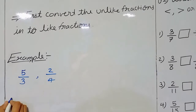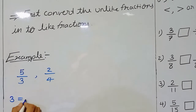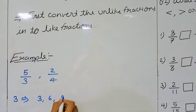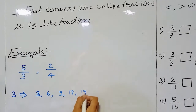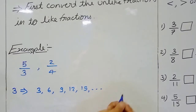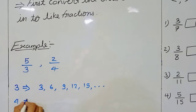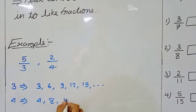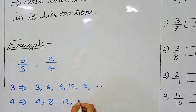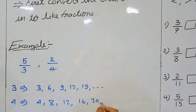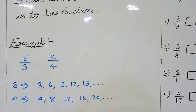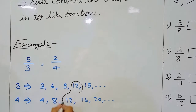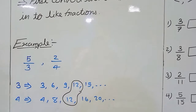As we learned: multiples of 3 are 3, 6, 9, 12, 15, and so on. Multiples of 4 are 4, 8, 12, 16, 20, and so on. Now you should be able to see the least common multiple is 12. That means we have to convert the denominators 3 and 4 both into 12.